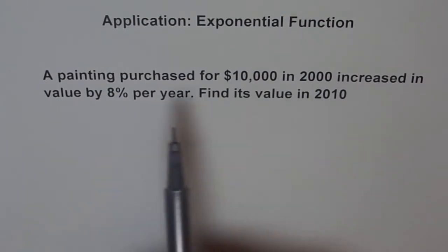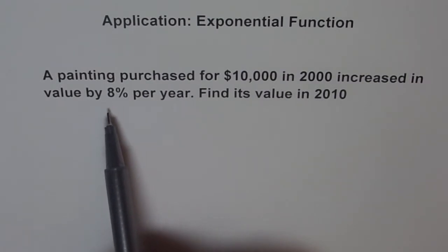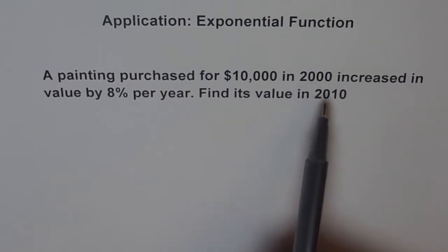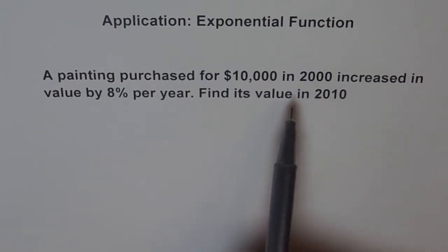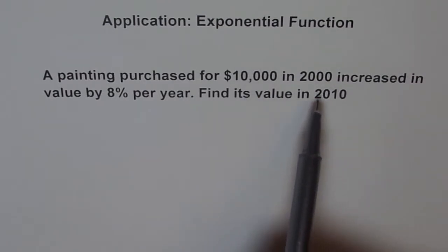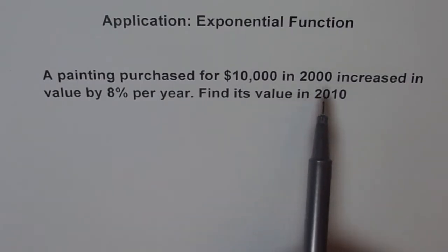So every year there is an appreciation of 8%, so the price is increasing and after 10 years we need to find the value of the painting. At times I have seen students writing 2010, but actually we have to write time period of 10, the difference every year. So from 2000 to 2010 is 10 years.